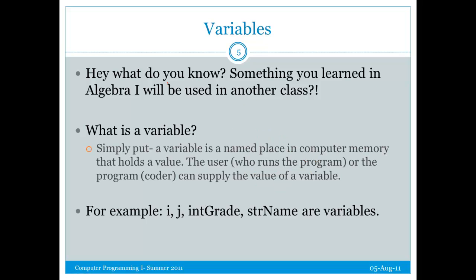A variable is simply a place, a named place in computer memory that holds a value. Now that value can be determined by the end user, who gives the program input, or you, the coder, who supplies the value of the variable, either hard coded, which means you actually write it in the code, or from some other means.